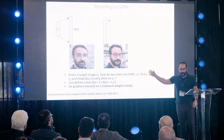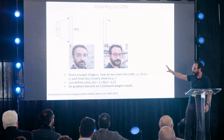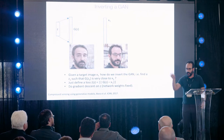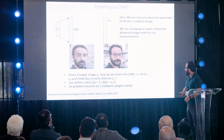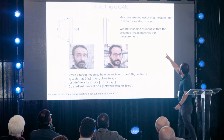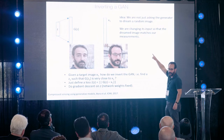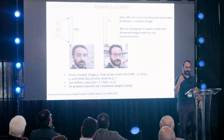You get a person who kind of looks like me — maybe a little older, a little sad. The key message is: we are changing the input Z so that the dreamed image matches the measurements. That's the punchline — that's how you use a generator to do useful stuff.